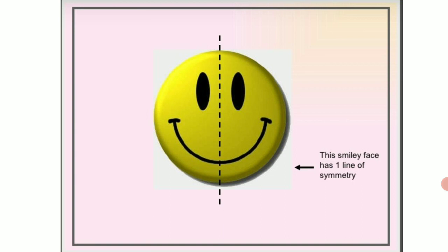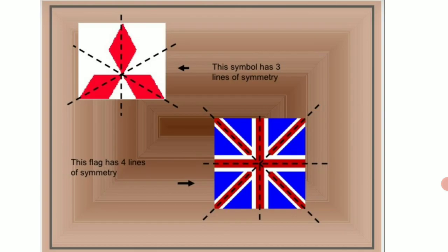Let us come to the face of a smiley. See here children the smiley is having only one vertical symmetry. So it is said that it has only one line of symmetry. Let us come to the geometrical figure given on the top, the red one which is showing it has three lines of symmetry. You can see here three arms of the picture given.